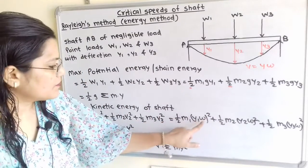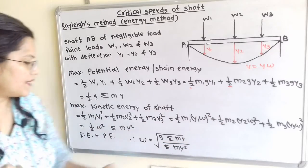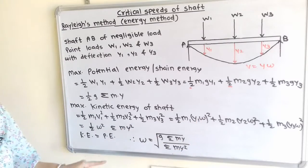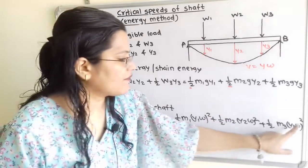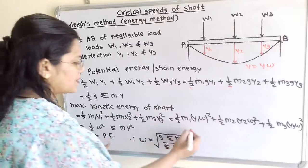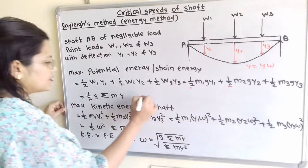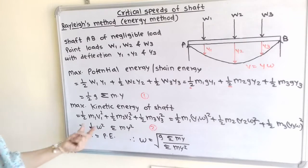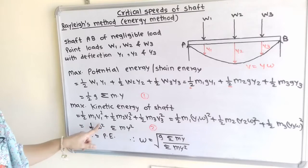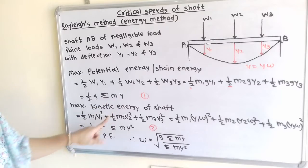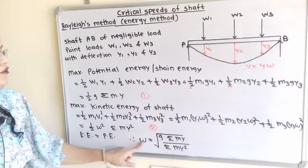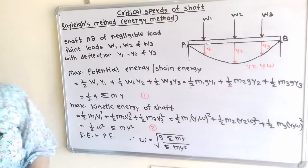Taking half and omega squared as common terms, we get half omega squared times summation of M1 Y1 squared plus M2 Y2 squared plus M3 Y3 squared, written in short as summation of M into Y squared. Equating the two equations, the half terms cancel, giving omega squared. Taking the square root, omega equals the square root of G times summation of MY divided by summation of M Y squared. This is the final formula to calculate omega using Rayleigh's method or energy method.